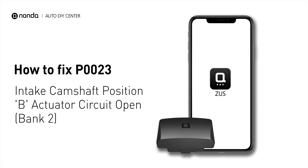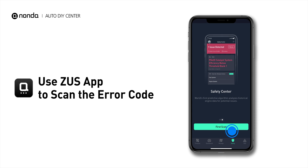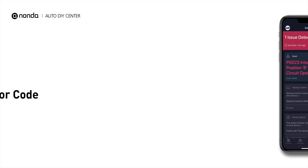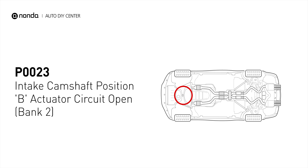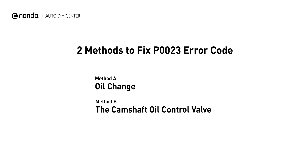If you are getting a P0023 error code, this video is going to show you two practical solutions to fix the error code at home. Use the Zeus app to scan your vehicle and see the error code P0023. It indicates that the ECM has determined that the bank two exhaust camshaft oil control valve has an open or short circuit. Here are two simple DIY methods you can try to solve this problem.